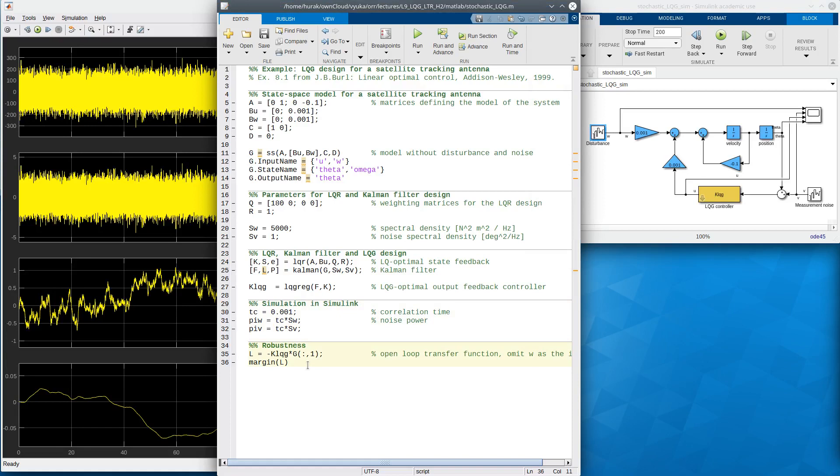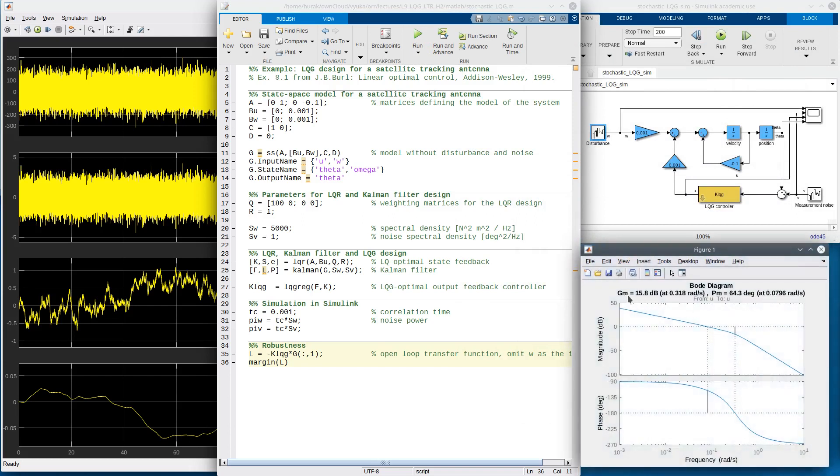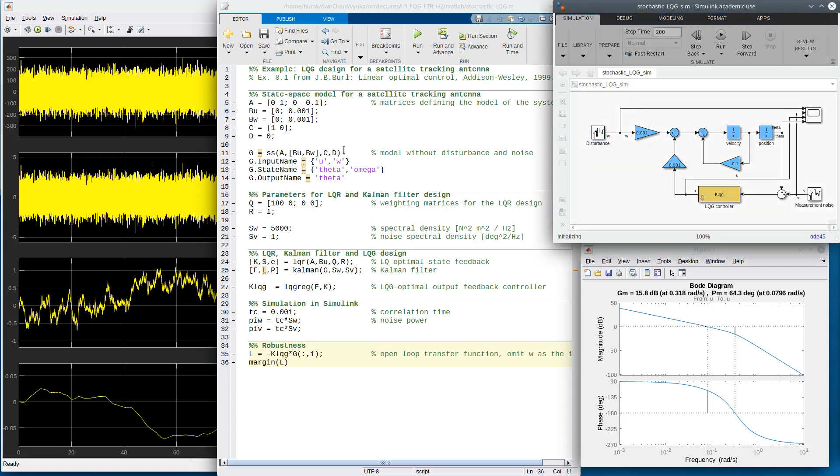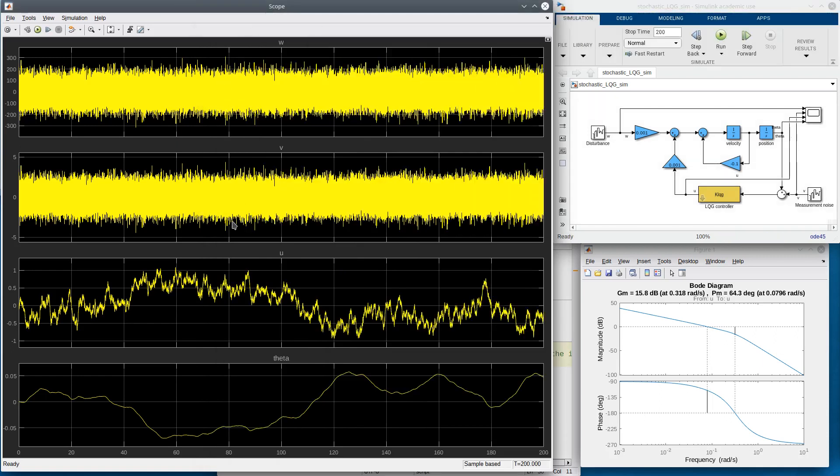In addition to the design, I can also analyze stability margins here. Let's run the design. Here is the open loop transfer function with the gain and phase margins already computed. This seems quite nice. Some 60 degrees phase margin and 15 decibel gain margin, pretty decent. Let's now run the simulation. Essentially, I get what I had there before. Let's have a look at these outcomes.